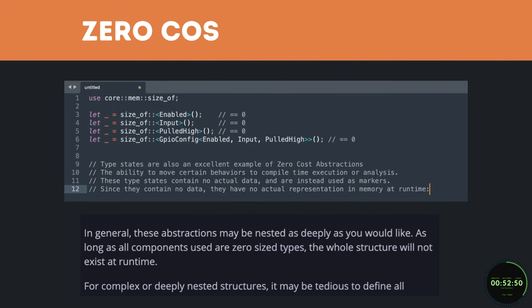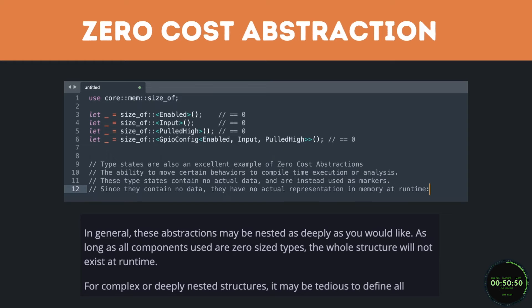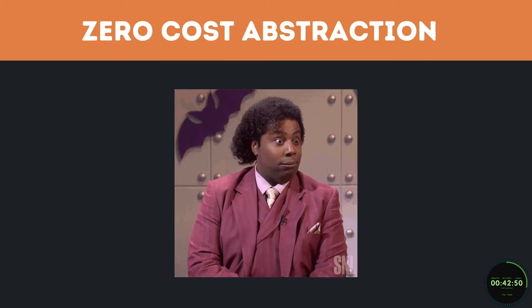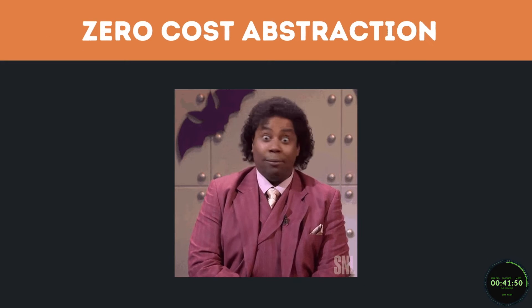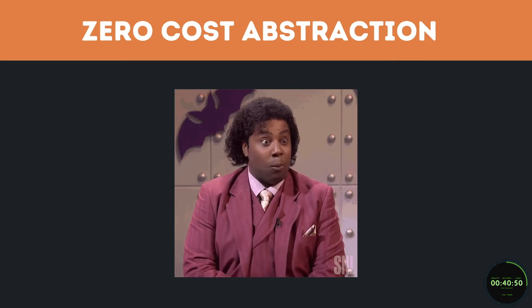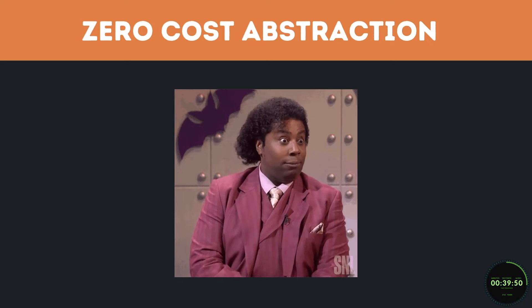Rust was also created around the concept of zero cost abstraction, meaning you can write your code in any style with any number of abstractions and not face any performance penalties, which is huge when talking about maintainability and performance as a whole.